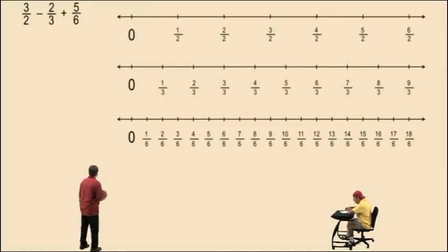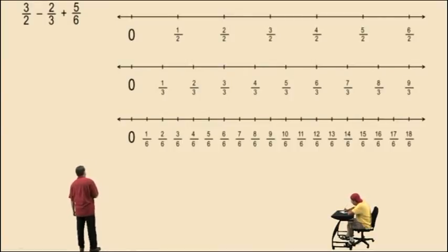Now, this is the problem we left off with in the previous video. So, we had mentioned that 3 halves is equivalent to the fraction 9/6 by looking at the number line. It's in the same location on the number line. 3 halves is in the exact location as 9/6. Therefore, they are equivalent.